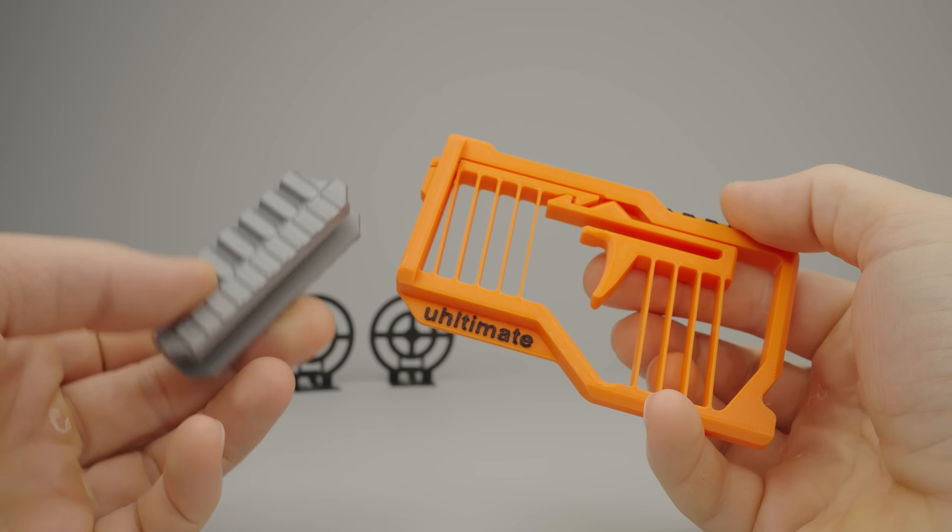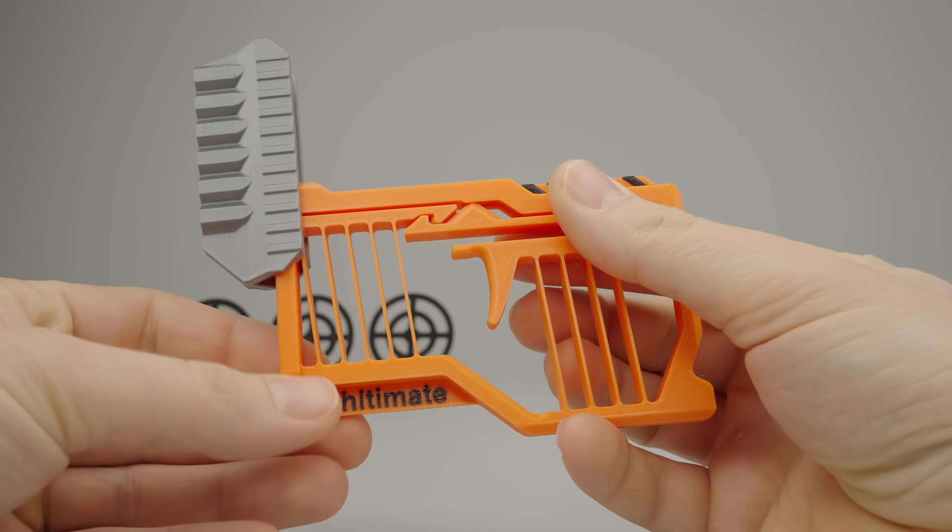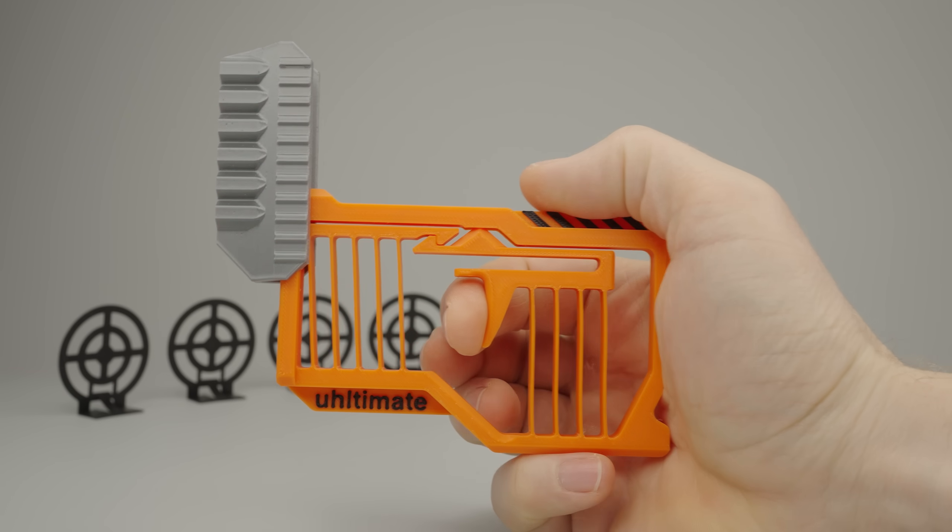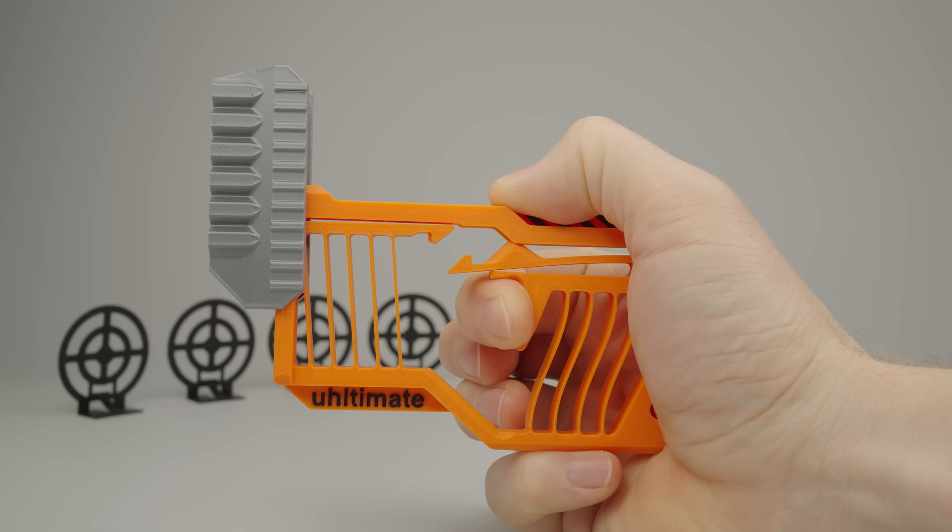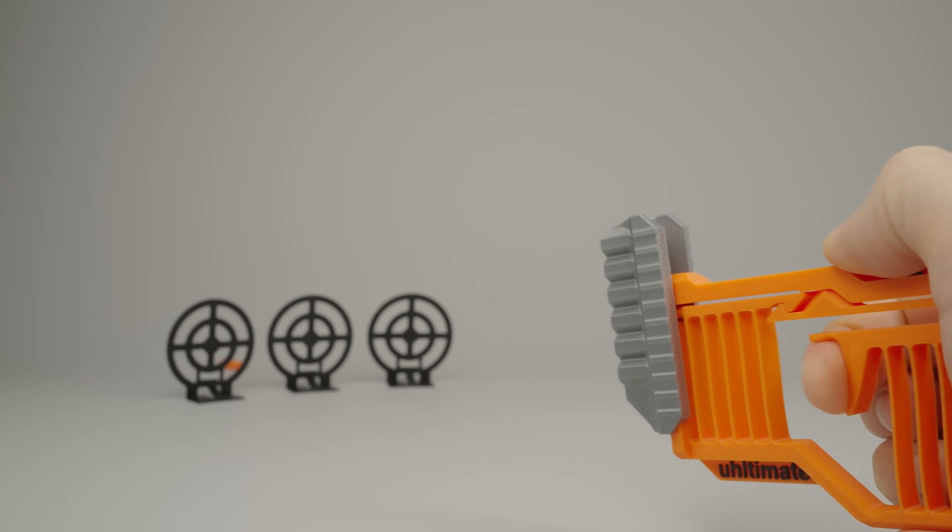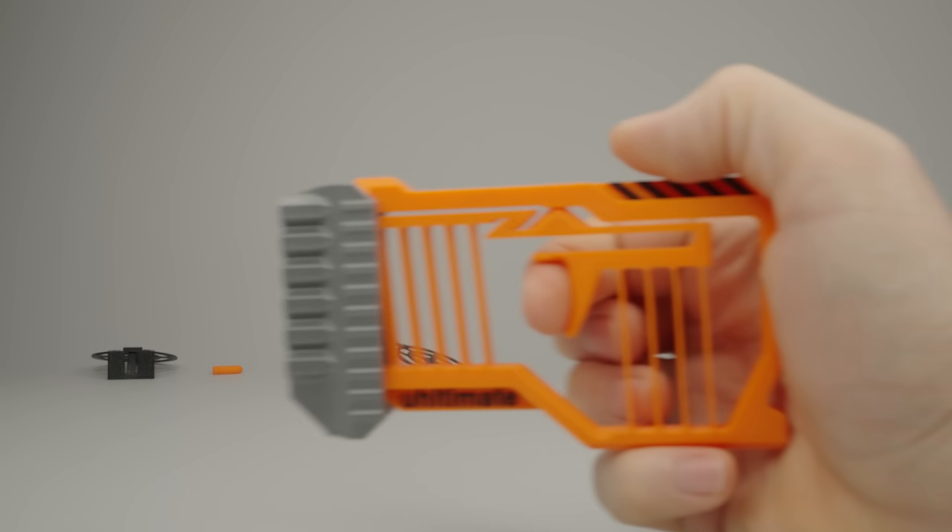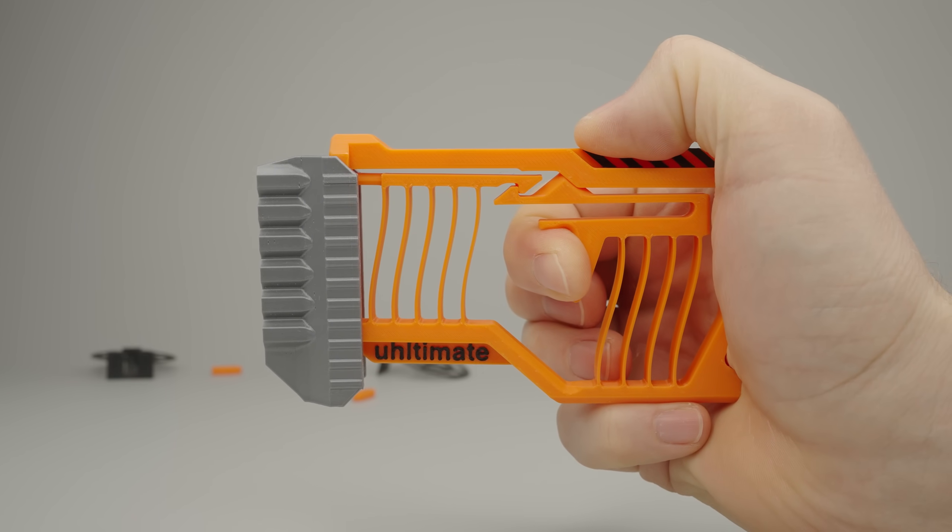To fire, just grab a loaded magazine and slide it onto the blaster. You can fire off six shots in a row without having to cock it each time. And after the last shot, the magazine drops out automatically.